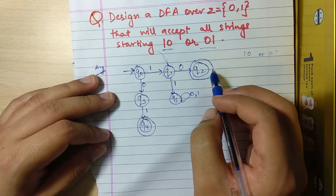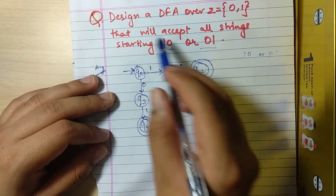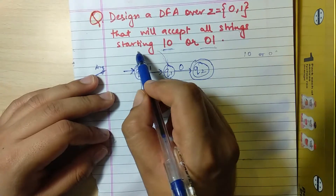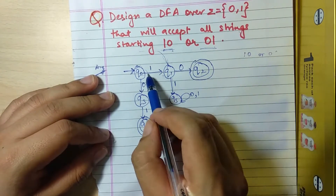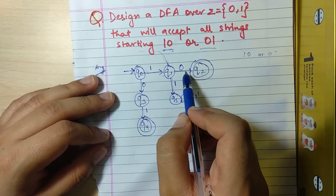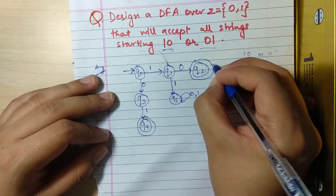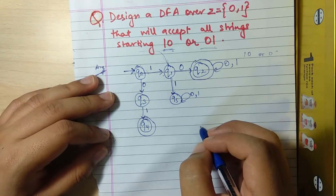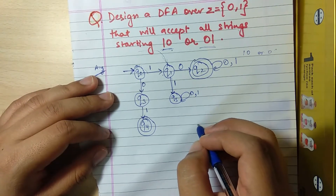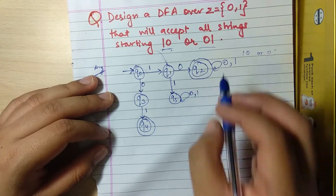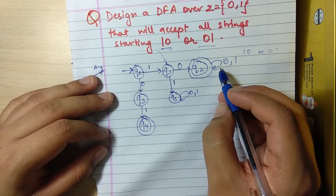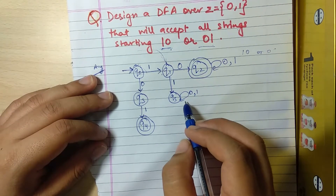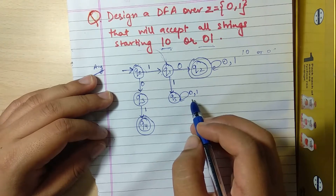For q2: the question says we have to accept strings starting with '10', so '10' is complete — we don't care what comes after. q2 is the final state. Note that the final state is different from a dead state; the dead state doesn't transit anywhere else, while the final state accepts the string.